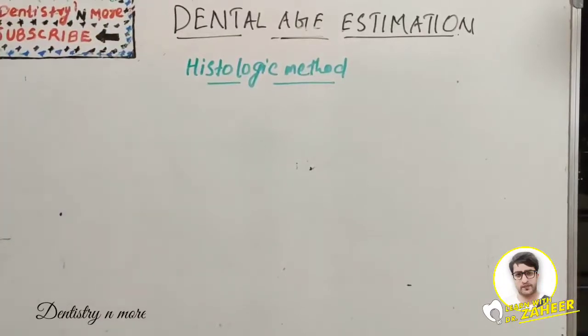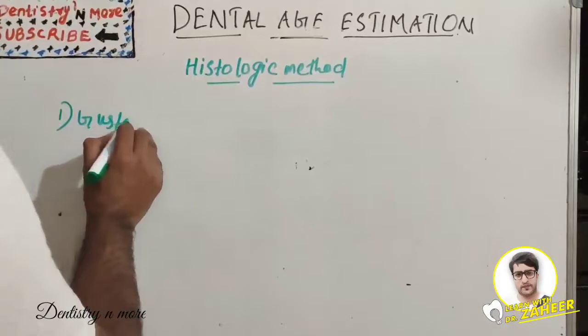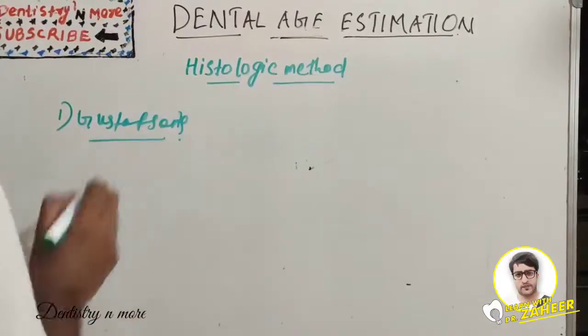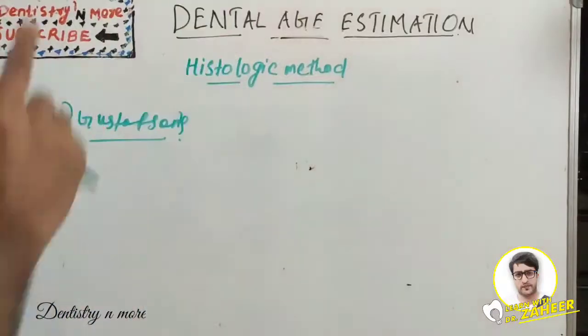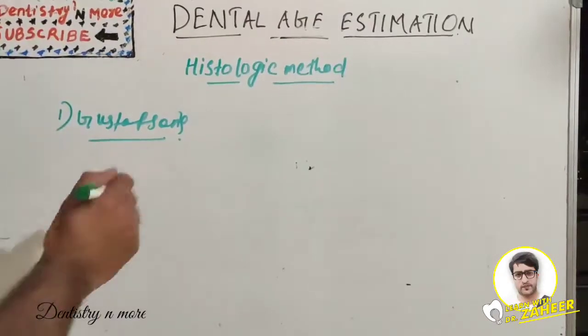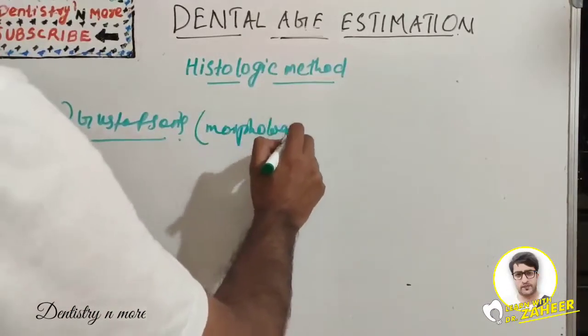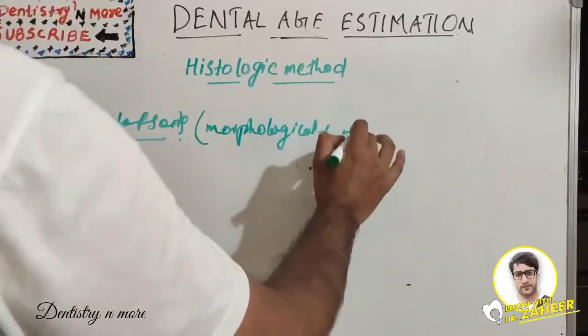Lastly we have the histologic method. Gustafson method, which we already discussed, uses six criteria including attrition, dentine translucency, secondary dentine, and root apposition. This is both a morphological method as well as a histological method.